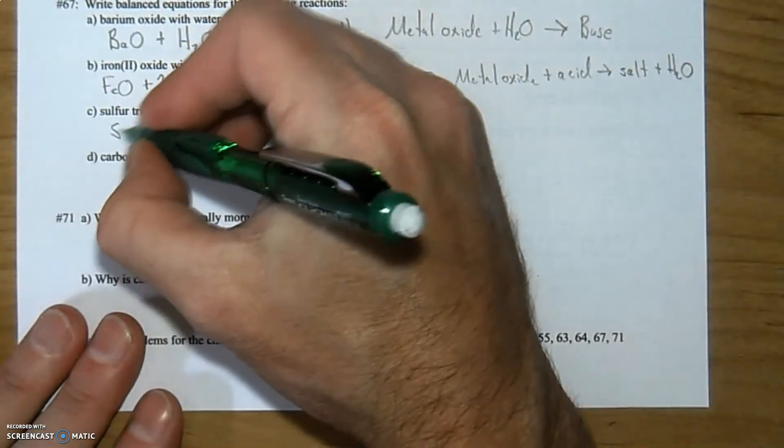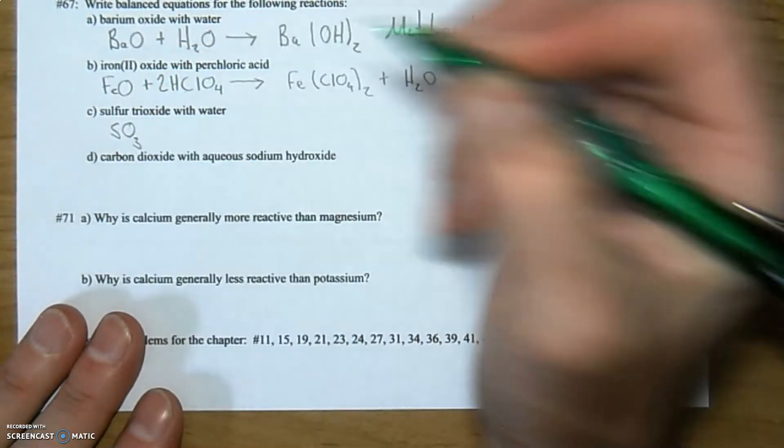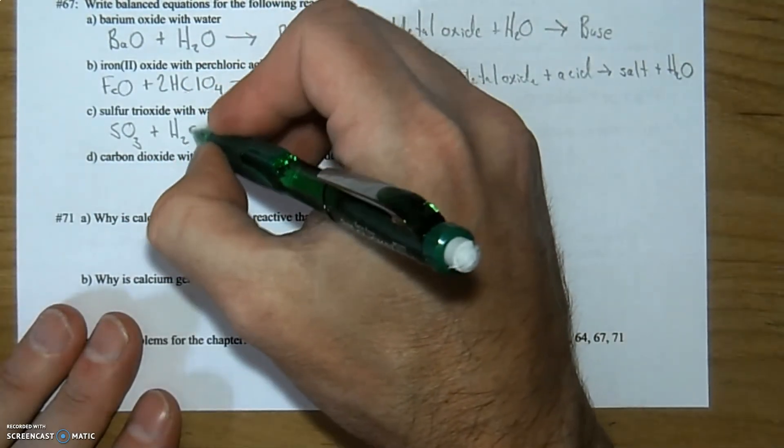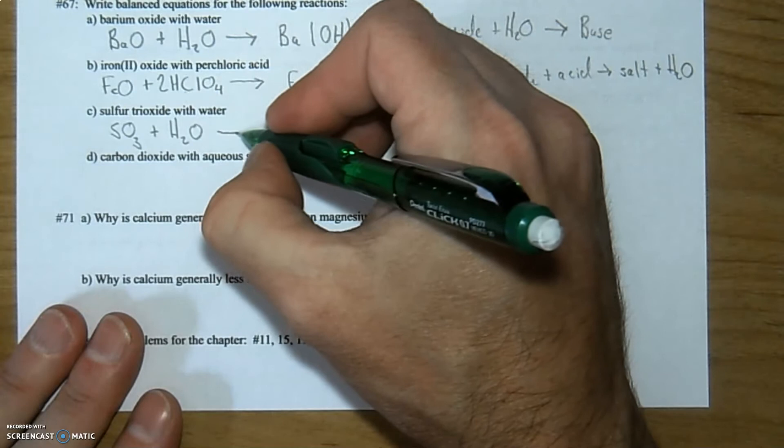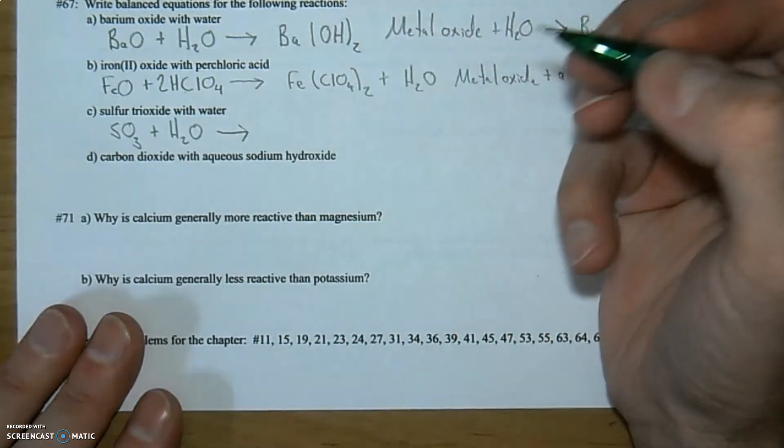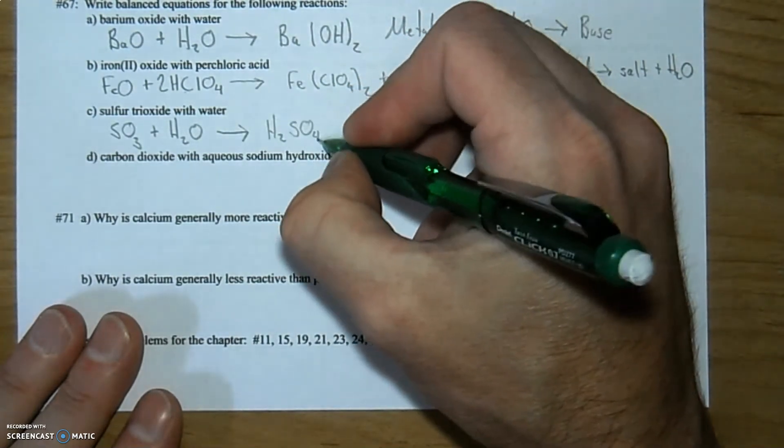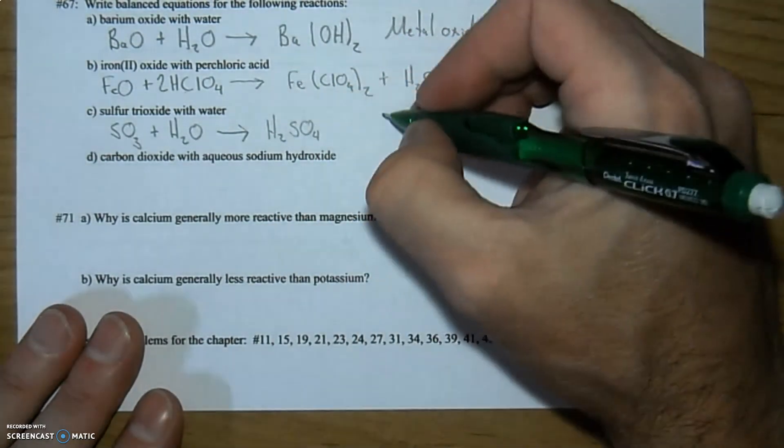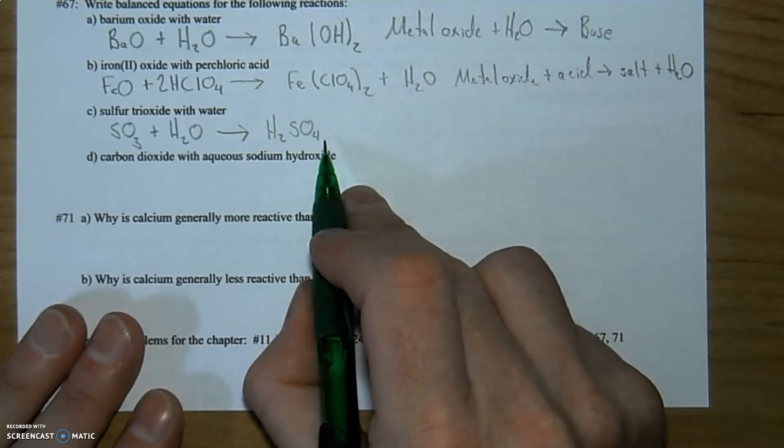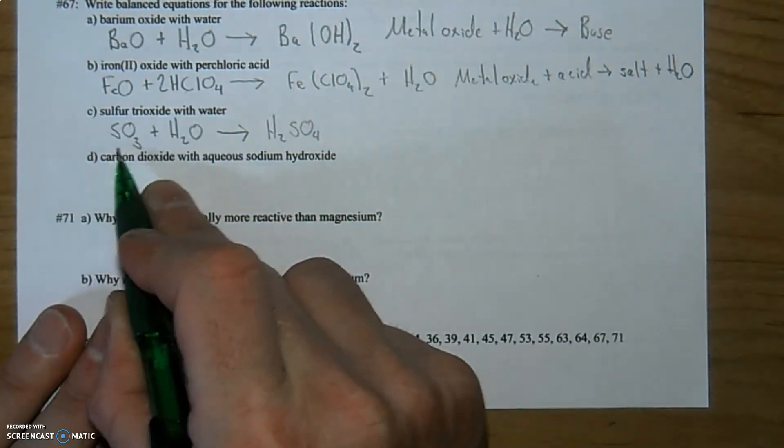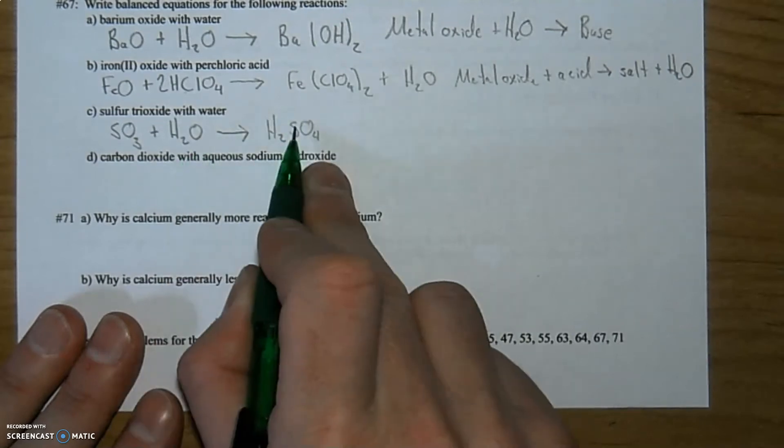Okay, sulfur trioxide. We've seen this once or twice now. And water. We should just charge right ahead on this one. It is a non-metal oxide plus water, it's going to be an acid. H2SO4, which is sulfuric acid. So I'm not going to write this out, but it is a non-metal oxide plus water producing an acid. There it is.